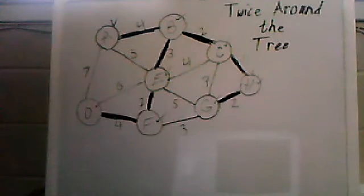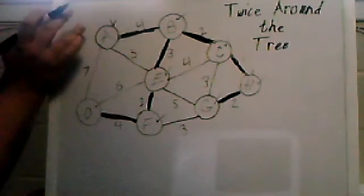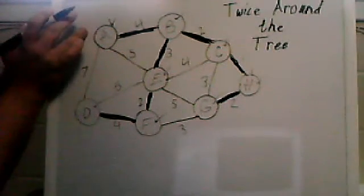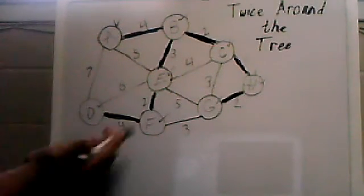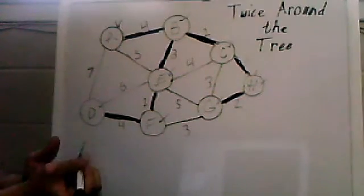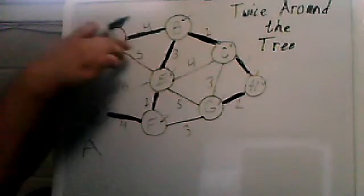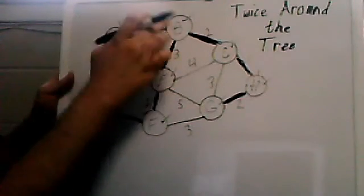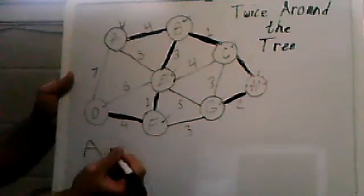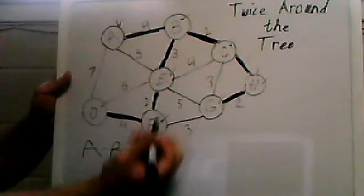The algorithm is rather simple. Choose a starting point or starting vertex. We'll choose A. You can only choose the edges that are within the minimum spanning tree. The A-B edge is going to be our next one.